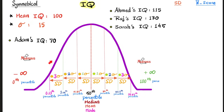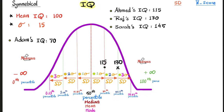Let's practice. This graph represents the IQ of a population — not a small sample, but the entire population. The mean IQ is 100, and since this is a normal distribution curve, the mean equals the median equals the mode, all at 100. The 50th percentile, or the second quartile, is also 100. The standard deviation is 15. Going 15 above 100 gives 115 — one standard deviation above the mean. Adding another 15 gives 130 — two standard deviations above the mean. And 130 plus 15 equals 145 — three standard deviations above the mean.